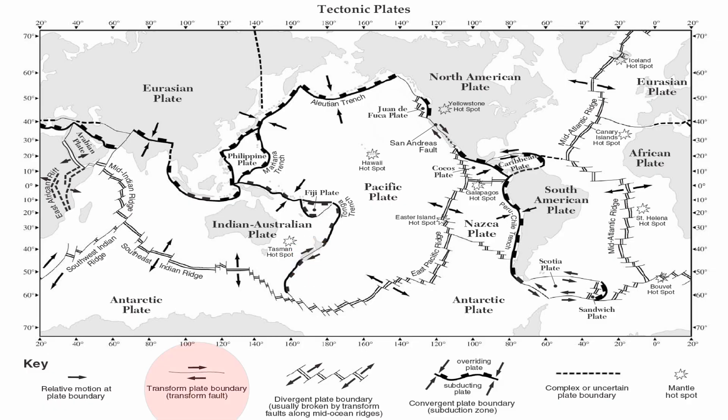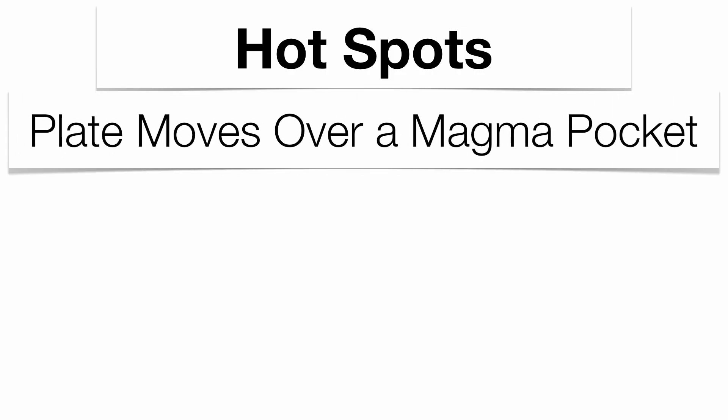In case you get a little bit mixed up, you have your key at the bottom of your map. That leads us to hotspots. Hotspots are a funny phenomenon because you tend to get volcanoes in the middle of a plate compared to along a plate boundary. A plate is going to move over top of a magma pocket underneath the surface, and the magma gets forced upward through the crust and a volcano forms.